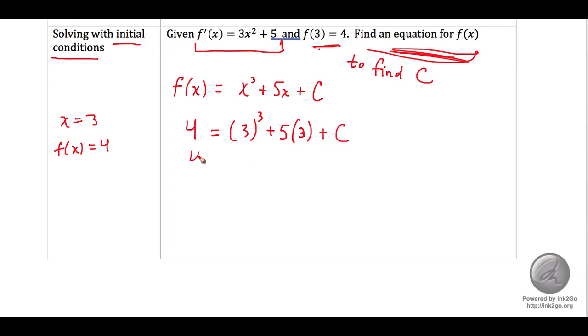So this is 4 equals 27 plus 15, which is 42, plus C. So that means C is equal to negative 37.